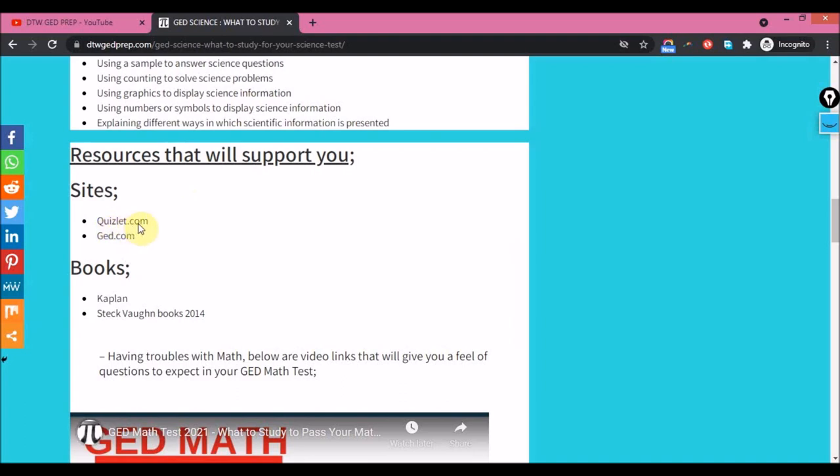Quizlet - what it does generally is to help you comprehend any form of text or passages, so it's going to help you in your RLA, it's going to help in your Social Studies, and also in your Science. Only that in science there are specific terms, scientific terms that are used, which going through your summaries on this site would help you with. And also GED.com - you need to go there and do some practice.